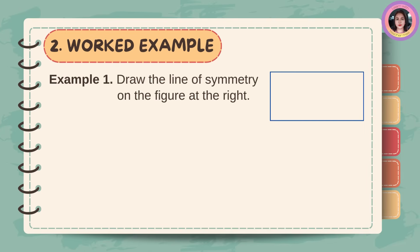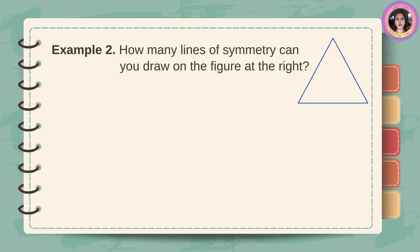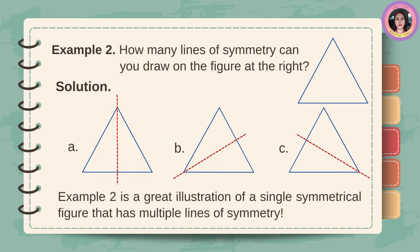Example number 1: draw the line of symmetry on the figure at the right. Solution: we see that a line of symmetry can be either vertical or horizontal, meaning there are two possibilities. Example number 2: how many lines of symmetry can you draw on the figure at the right? Solution: example number 2 is a great illustration of a single symmetrical figure that has multiple lines of symmetry.